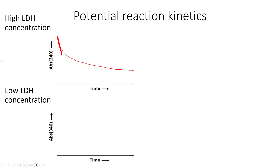If you have a fairly low LDH concentration, you might see a graph with a similar shape, but the computer software will automatically zoom in, so you'll see what looks like noise. You'll still see the same reaction shape, just with more noisiness to that gentle slope. As long as you have a gentle slope and something you can measure as that initial velocity, that is perfectly sufficient.